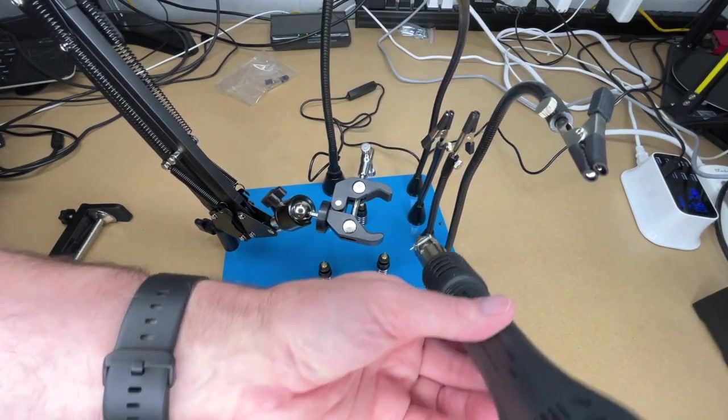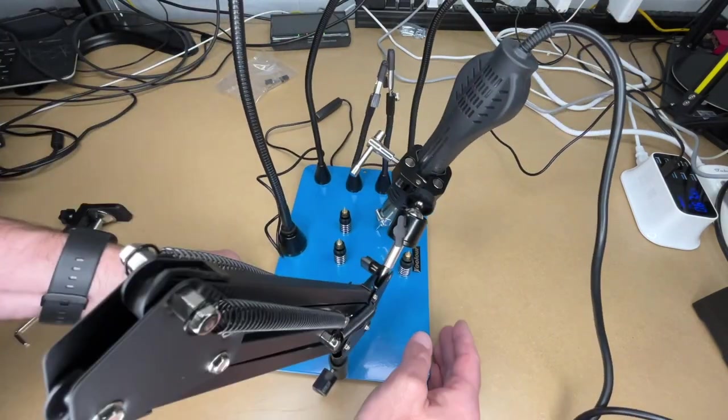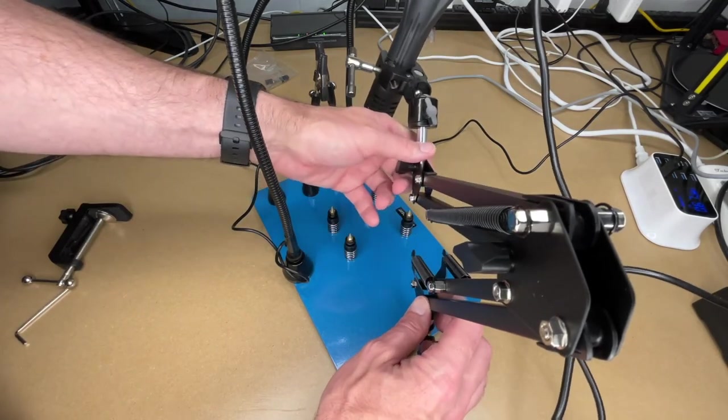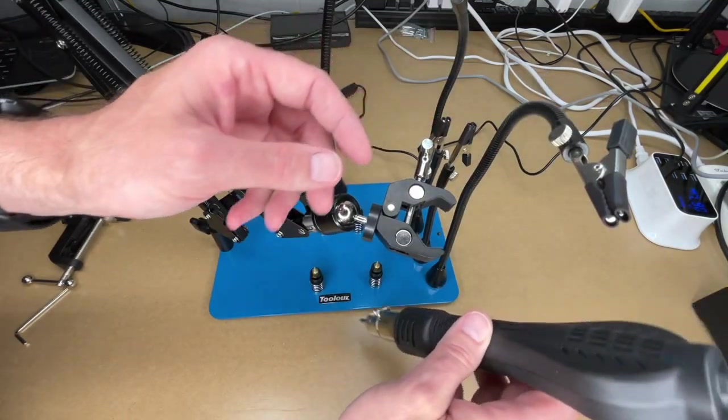And we can use this to do something like hold a heat gun. So here I'm holding my heat gun in place. I'd probably want to lift that up. It's actually touching the base, but it will definitely hold the weight of that. So that's one example.